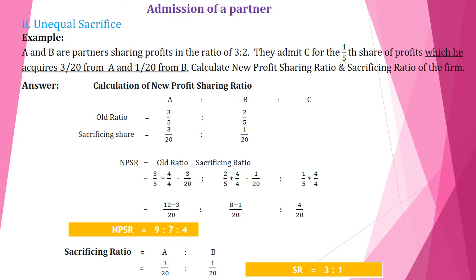Calculation of new profit sharing ratio: for A, B, C — old ratio is 3/5 and 2/5. The sacrificing share for A is 3/20 and for B is 1/20. We apply directly into the formula: new profit sharing ratio = old ratio minus sacrificing ratio. For A: old share is 3/5, sacrificing share is 3/20. For B: old share is 2/5, sacrificing share is 1/20. To make equivalent fractions, we multiply by 4/4.